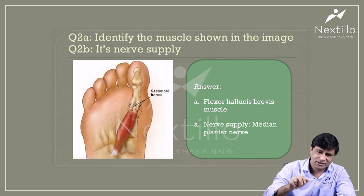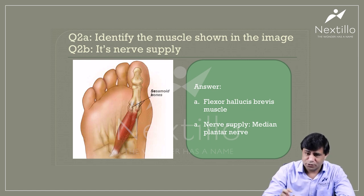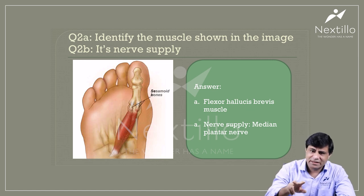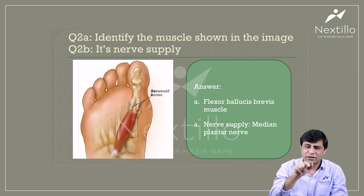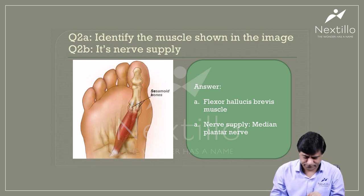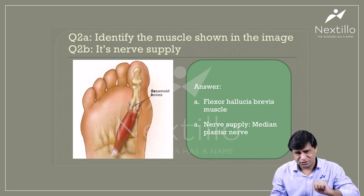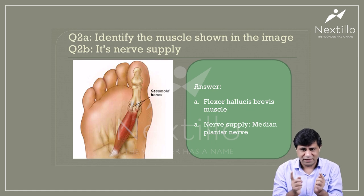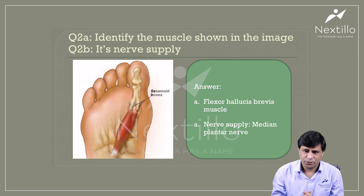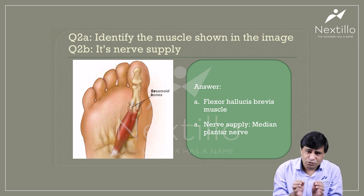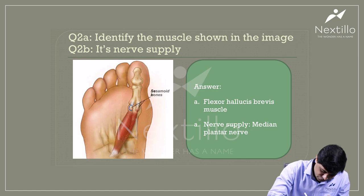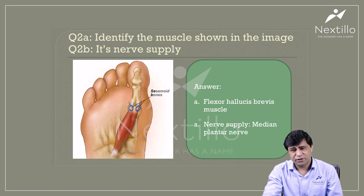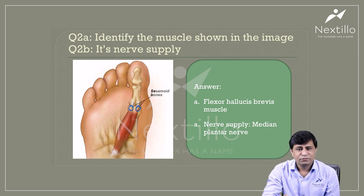The two heads join together. When they reach toward the ball of the great toe, the muscle splits into two heads, and in between passes the long tendon — the flexor hallucis longus coming from behind. The longus reaches the terminal phalanx, while flexor hallucis brevis attaches on both sides of the proximal phalanx of the great toe. Importantly, this muscle has two sesamoid bones placed on either side at the ball of the great toe.